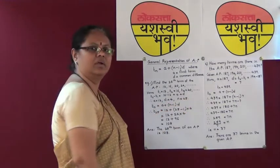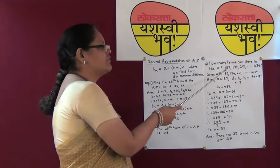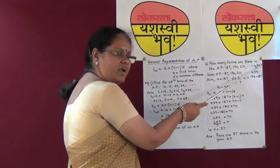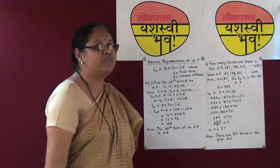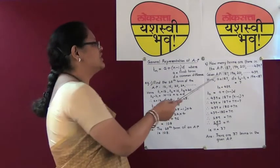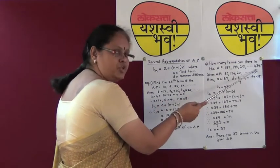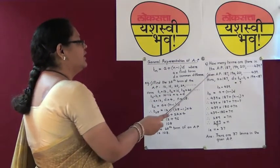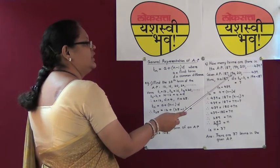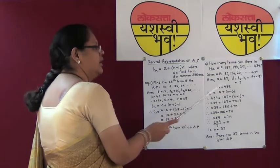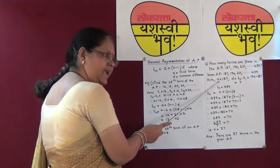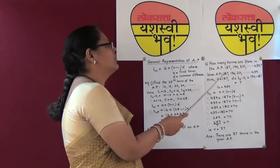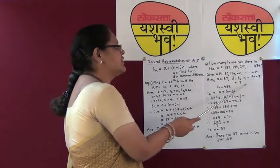Observe the question carefully. The arithmetic progression consists of a first term and also a last term, which is 439. We have to find the number of terms N lying in this progression from 187 to 439. The first term A is 187. The common difference D is 194 minus 187, that is 7. Tn, the last term, is 439. Substituting in Tn equals A plus (N minus 1) D, we get 439 equals 187 plus (N minus 1) into 7.